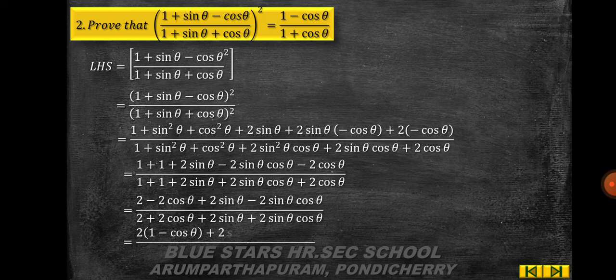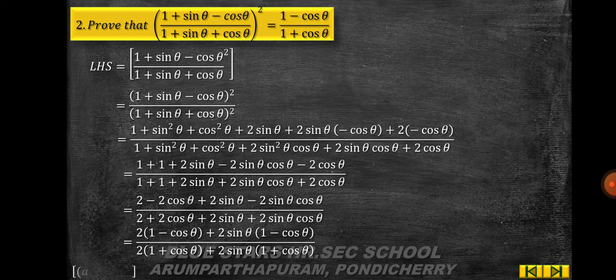Factoring the numerator: 2(1 − cosθ) + 2sinθ(1 − cosθ). Factoring the denominator: 2(1 + cosθ) + 2sinθ(1 + cosθ).